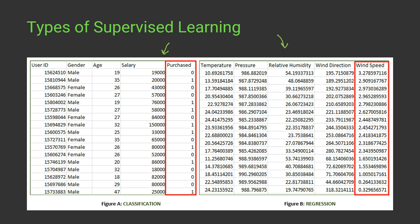The first dataset is an employee dataset with employee ID, gender, age, and salary. We are predicting whether the employee will purchase a particular item or not. While training, we have both input and output — the input features and the purchase label — which is why this is a labeled dataset.